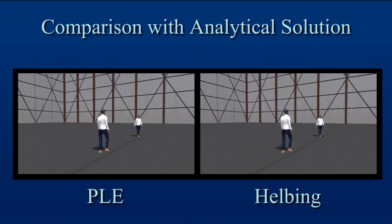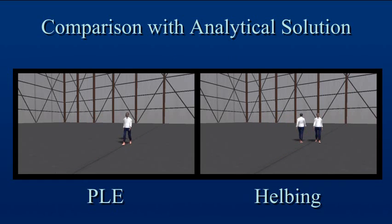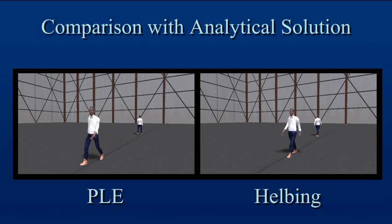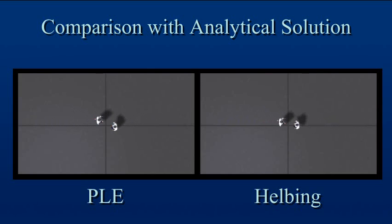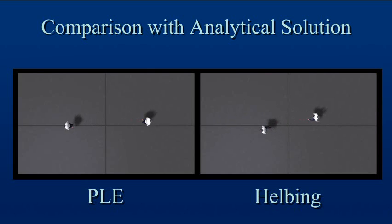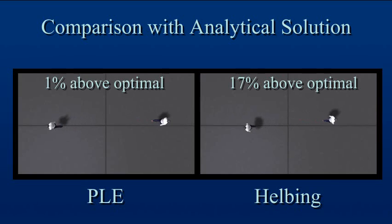In simple cases, it is possible to analytically determine the optimal path for an agent. Here we show a single case of two agents exchanging positions. On the left we show the PLE results, and on the right we show the results from a social force-based algorithm. The PLE trajectories consume only 1% more than the optimal amount of energy, while the social force-based model exceeds it by 17%.